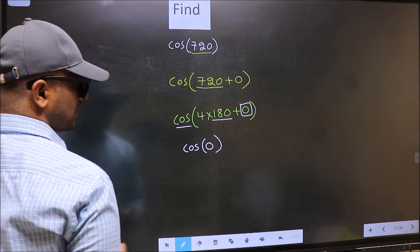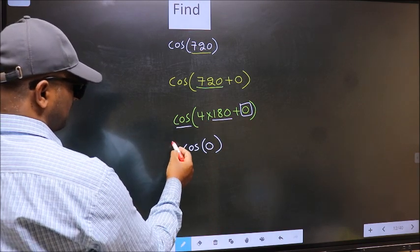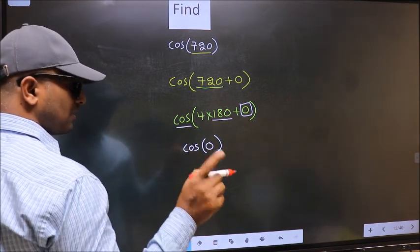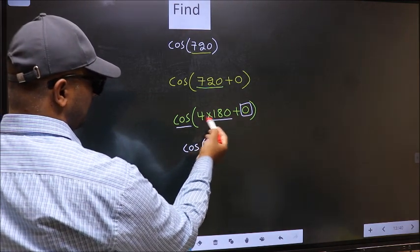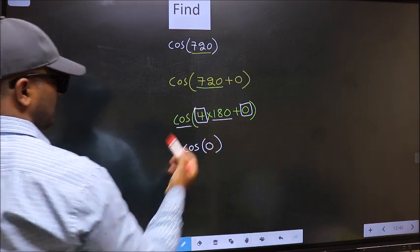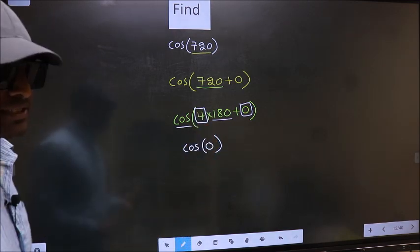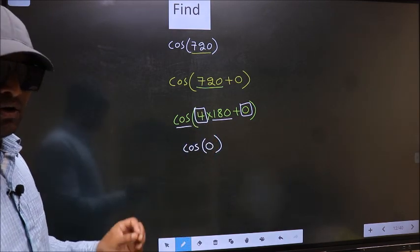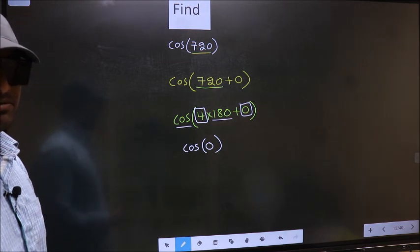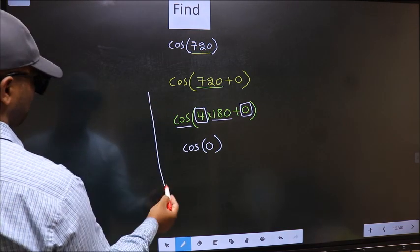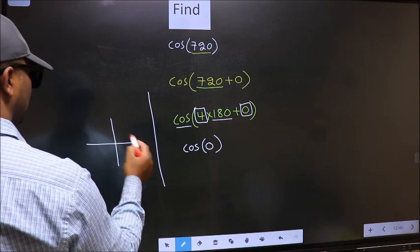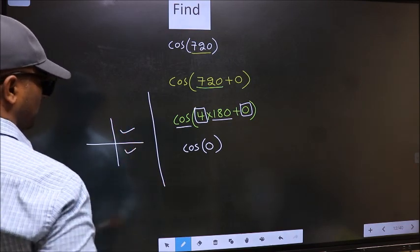Now the question is, will we get here plus or minus? To answer that, we should look at the number before 180, that is 4. And 4 is even and all the even multiples of 180 lie in either the first or in the fourth quadrant.